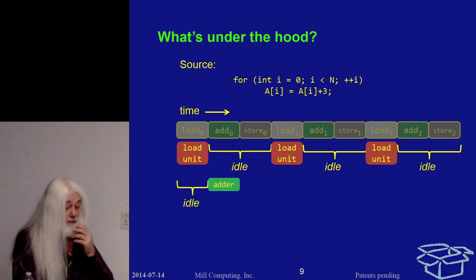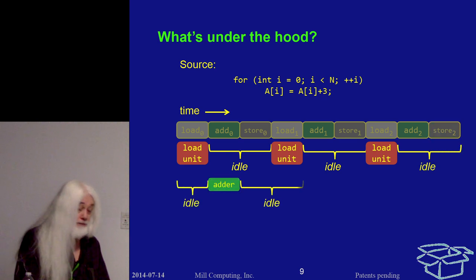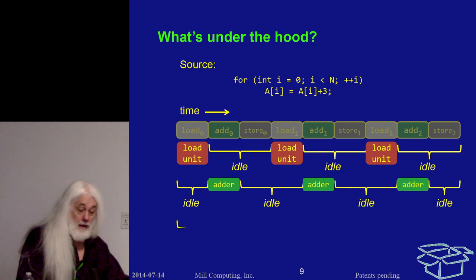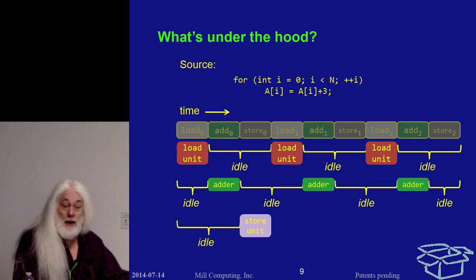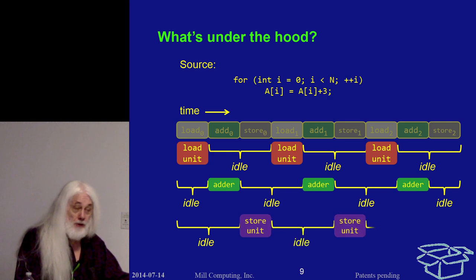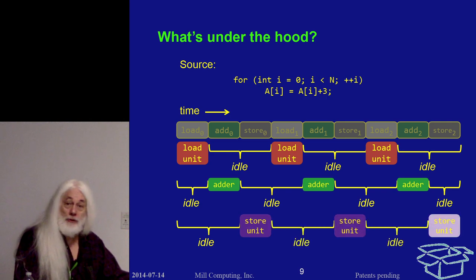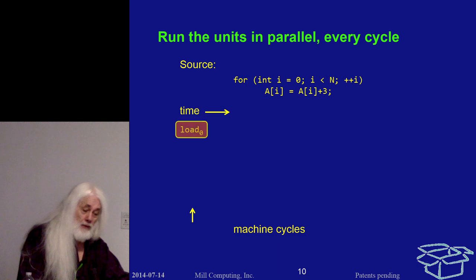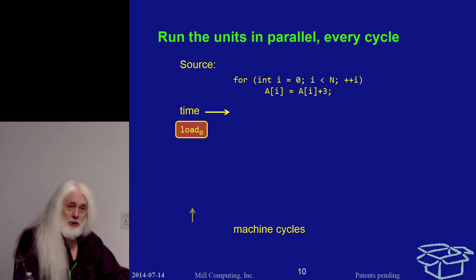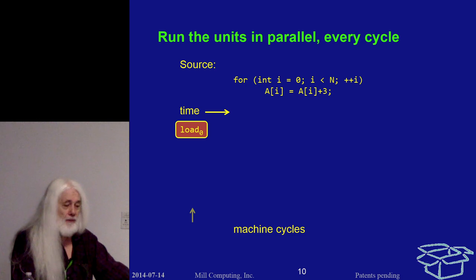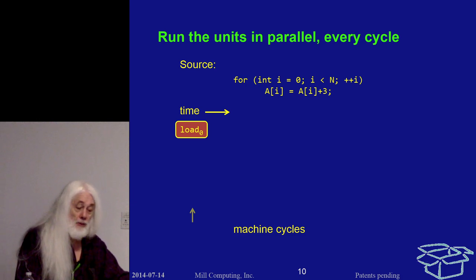Furthermore, exactly the same idling happens with the adder and with the store unit. This is woefully inefficient — the functional units are idle two-thirds of the time. So, what we do is we run the units in parallel every cycle, working on different iterations. We start off with the load, and the following cycle we do a load for iteration one while we're doing the add for iteration zero.